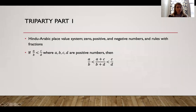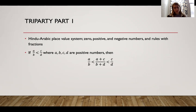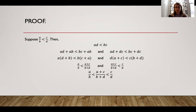In Triparty Part One, he focuses on the Hindu-Arabic place value system, zero, positive and negative numbers, and rules with fractions. Something he proved was: if the fraction A/B is less than C/D, where A, B, C, and D are positive numbers, then if you add the numerators and the denominators together, that resulting number A+C over B+D is greater than A/B but less than C/D.